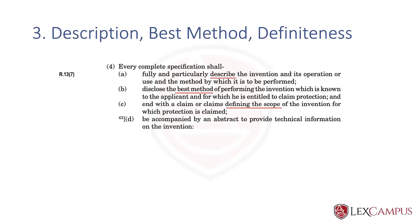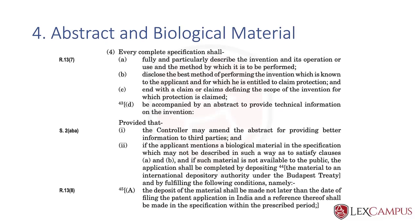Apart from this, the specification shall also include an abstract which provides technical information. Abstract and biological material is the fourth thing to remember about Section 10. Section 10.4(D) says the specification shall be accompanied by an abstract to provide technical information. The proviso says the controller may amend the abstract — so the power is specifically given to the controller, in addition to the applicant, to amend the abstract for providing better information to third parties.